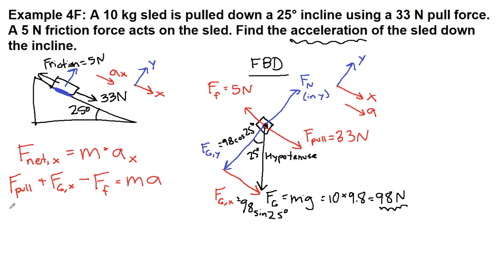Now we can plug in what we have so far. We have 33 plus, in parentheses, 98 sine 25 degrees, minus 5, and all of that equals 10A. So I'll get the whole left side in my calculator.